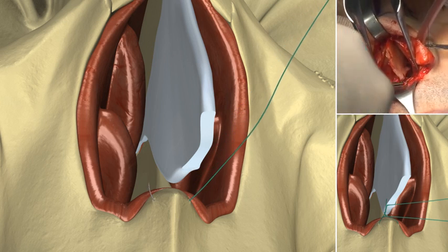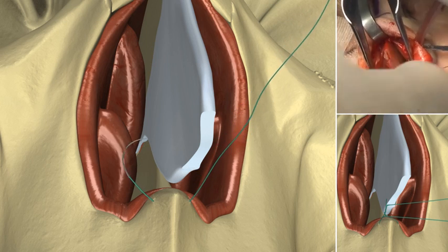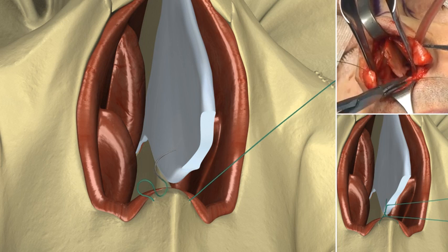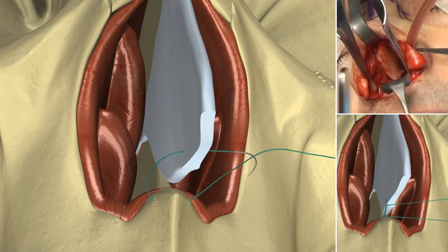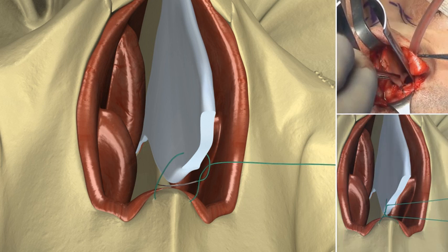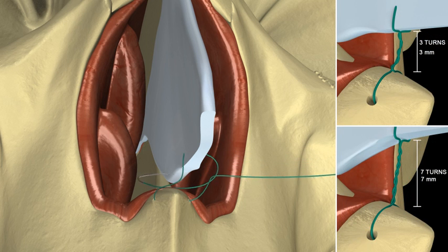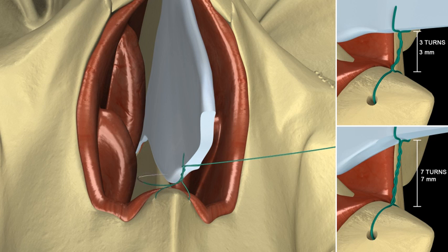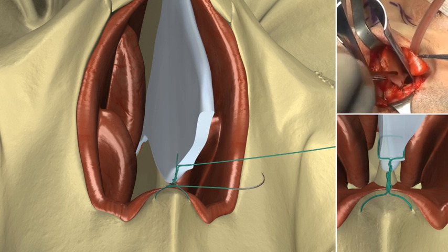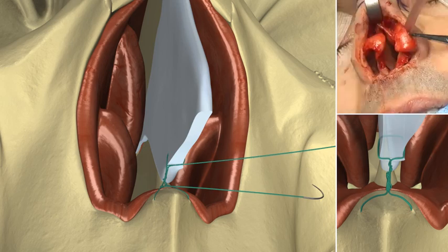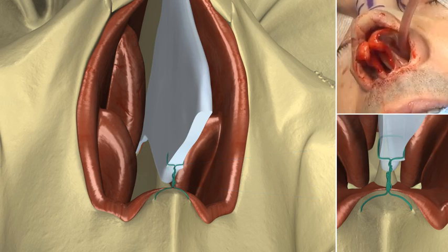The number of turns should vary depending on the gap between the septum quadrangular cartilage and anchoring zone — bone or ANS periosteum. For example, if the gap between the two different tissues is 5-7 mm, it should be created a coil of at least 7 turns. As you can see, stabilization is optimal, preventing any risk of cartilaginous breakdown.